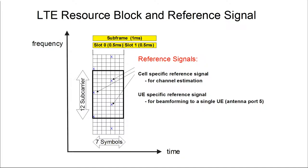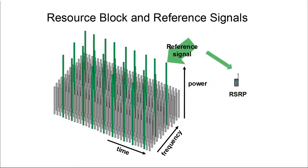Reference signals are a very useful thing. Certain sub-carriers are designated as reference signals. In this time-frequency resource grid we have a third dimension. Reference signals, because of their position, carry the cell ID number. And because of their power, the end device can measure how strong the signal is.